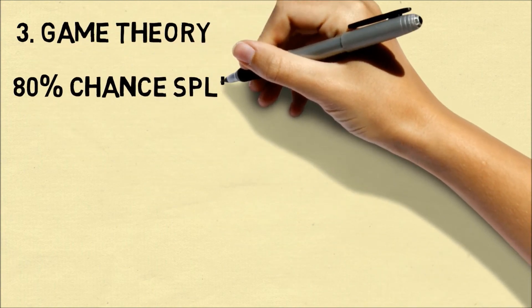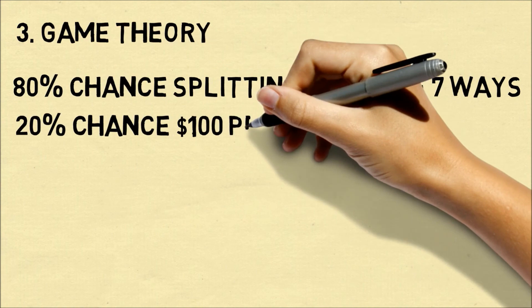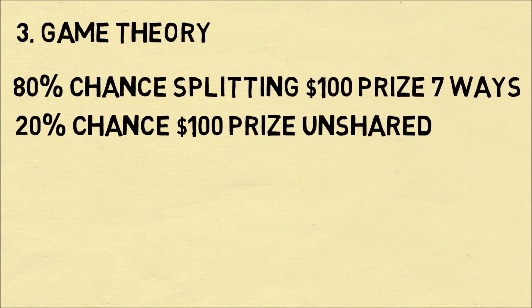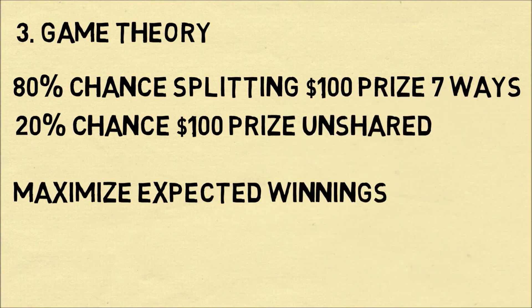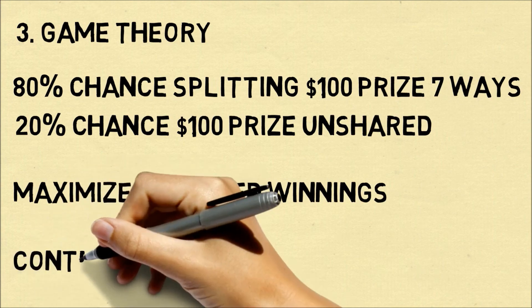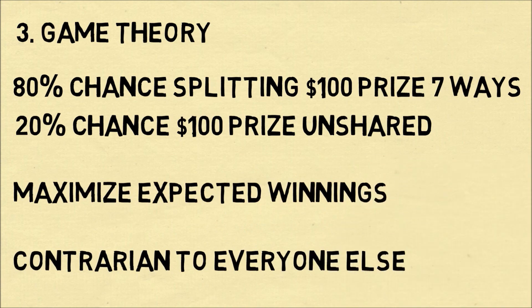Tip three: use game theory. Would you rather have an 80% chance of splitting a $100 prize seven ways, or a 20% chance of having the $100 prize to yourself? The 20% chance of having the prize to yourself will give you the most expected winnings. You should try to maximize your expected winnings — it's not about winning your bracket with the highest percentage, but rather when you win, you also have a chance of getting the most money. Game theory suggests you should be contrarian to everyone else: if everyone else is playing the favorites, you pick the sleeper picks; if everyone else is picking the sleeper picks, you should pick the favorites.